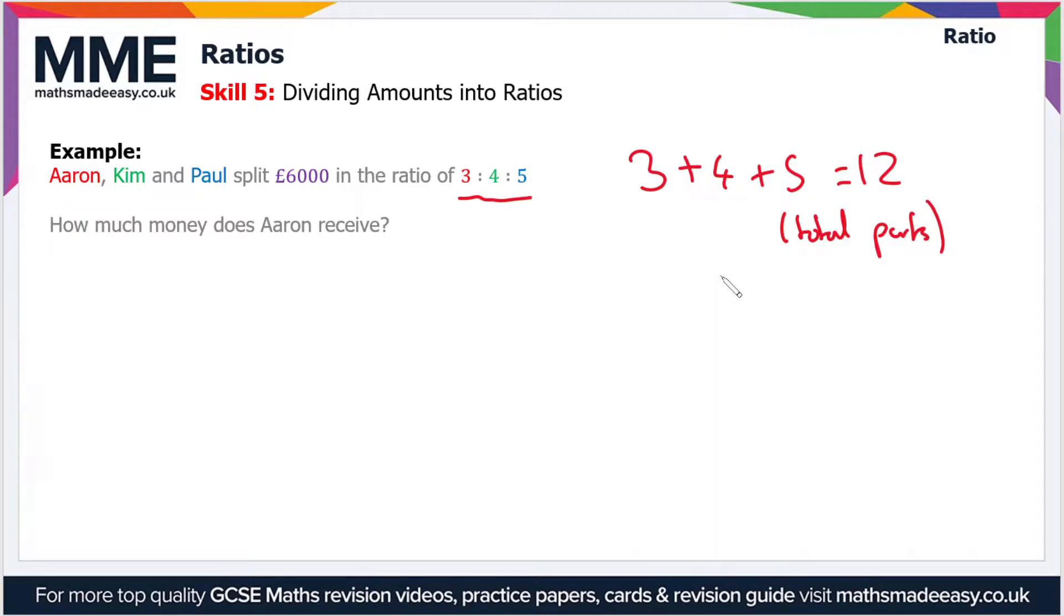Now we have the total number of parts, we can divide £6000 by this value, and that will give us the value of one part. If we divide 6000 by 12, that gives us £500. So that's the value of one part.